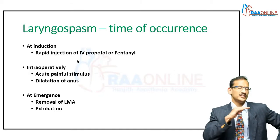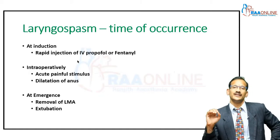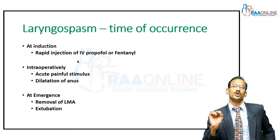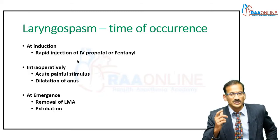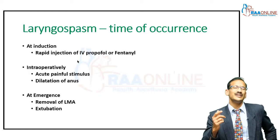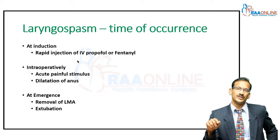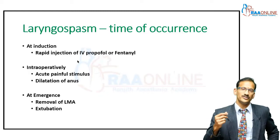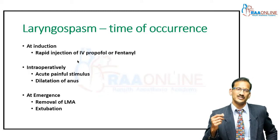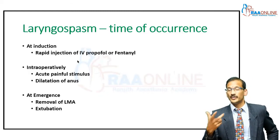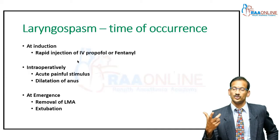This is something I've seen time and again. So when you're giving propofol or fentanyl in a small child, just give it slowly and gradually, preferably in a running drip. Don't do it very fast, particularly if they have a propensity for IV hyperreactivity.